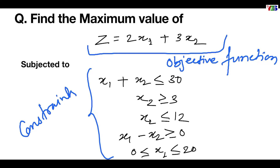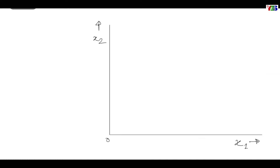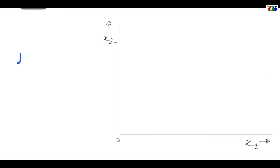We will draw lines for different constraints. Let us see it step by step. The first step is to draw the x1 and x2 axis and calibrate these axes in the required scale.